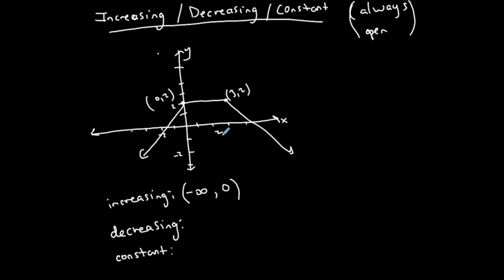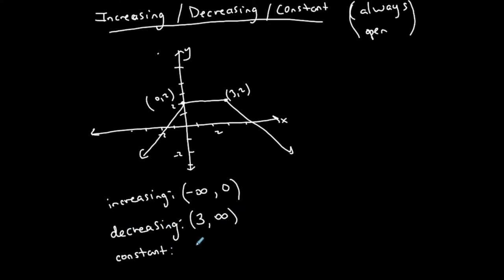Decreasing means going down — as x goes from left to right, y goes down. That looks like this section here. It starts to decrease at the x-coordinate of 3, so we use an open parenthesis. The graph continues to decrease and goes on forever, until x is positive infinity. So the decreasing interval is (3, ∞).